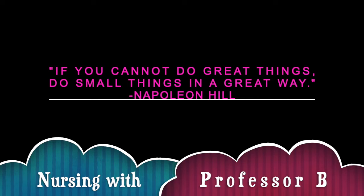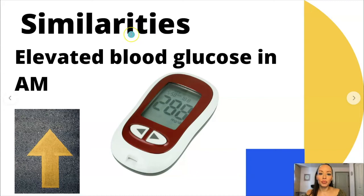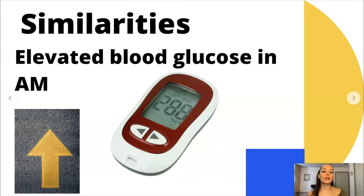The Somogyi effect versus the Dawn phenomenon. So what are the similarities between both of these? They both have elevated blood glucose when their blood glucose is checked in the morning. You're going to see an elevated blood glucose — here you see a 288. The reason this is important is because the interventions, recommendations to the provider, and how we treat it is different.